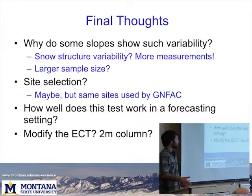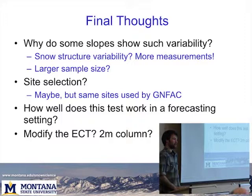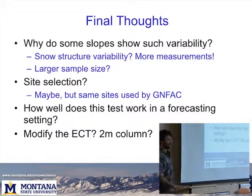Some other thoughts: why are some slopes showing so much variability, and what could we do to look at that? Something I want to do is look at snow structure variability — it would be great to take a snow micropenetrometer or something and get a hardness profile at all of my pits. Maybe it's minute hardness changes or small-scale snow depth or weak layer changes that I wasn't able to see.